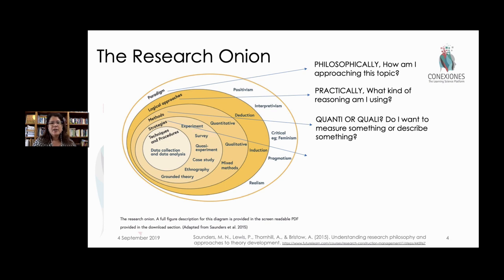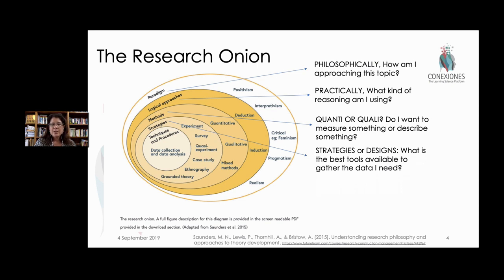In order to collect data, you have to have a strategy or design. These break down into basic tools — am I going to use a survey, or do an experiment, or use a case study of an individual person? If you use grounded theory, it's because you're thinking of something nobody else has thought of before, coming up with something from the ground up and collecting information that points to something new.